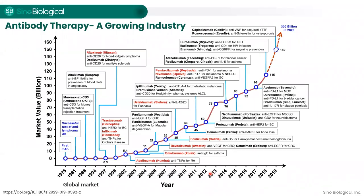Antibody therapeutics is a growing market. Therapeutic antibodies have become the predominant class of new drugs developed in recent years, growing successfully since its introduction more than four decades ago. Over the past five years, antibodies have become the best-selling drugs in the pharmaceutical market. The global therapeutic monoclonal antibody market was valued at approximately $115 billion in 2018, projected to reach more than $300 billion by 2025, driven by approvals for many cancers, autoimmune, metabolic, and infectious diseases.